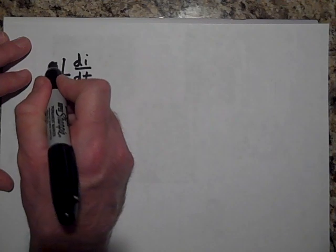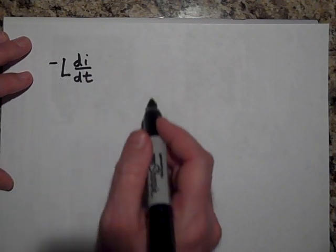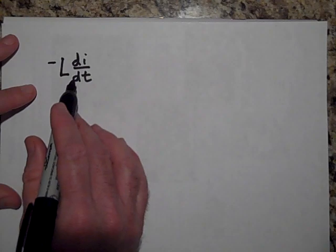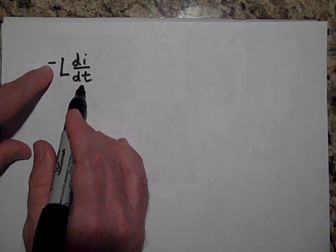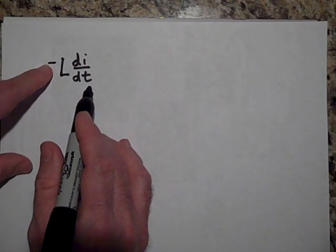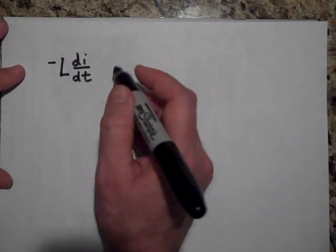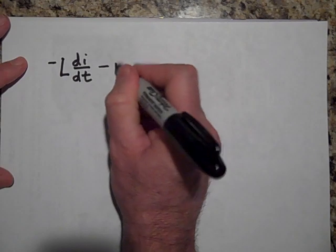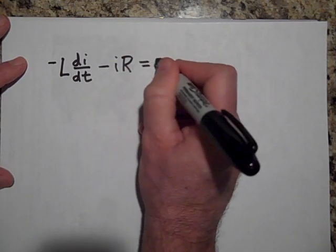So I'm going to put a negative here to make it so that it's pointing in the right direction for me. So the current is dying out and so this is going to be negative, and that negative will give me a positive voltage minus I times R. That's going to equal zero.